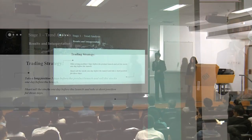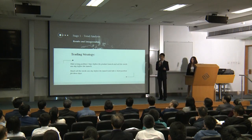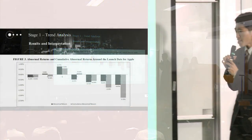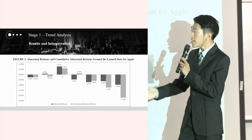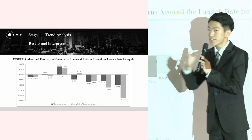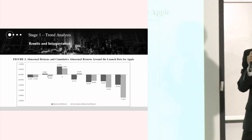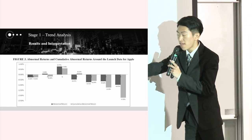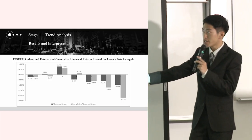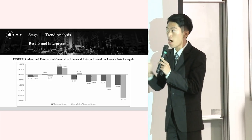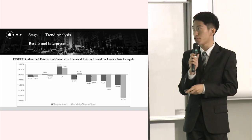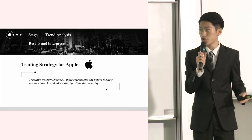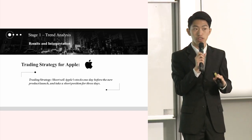We do the data analysis especially for Apple and Samsung. Here is the result for Apple. We can see that in the pre-launch period, the stock return fluctuated a lot and there is not a regular pattern. But we are very impressed by the decreasing trend after the new product launch. So we want to take advantage of this part and make a specific trading strategy for Apple: short the Apple stock one day before the new product launch and take this short position for three days.